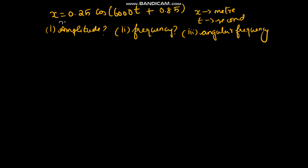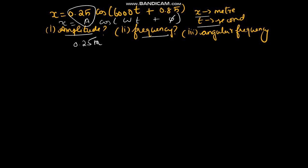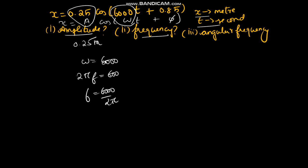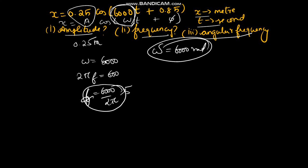Now, comparing x = A cos(ωt + ψ) with a given equation where x is in meters and t in seconds: the amplitude is 0.25, so it is 0.25 meters. For frequency: ω = 6000, so 2πf = 6000, giving f = 6000/(2π). The angular frequency ω is 6000 radians per second. This is the common type of question asked about amplitude, frequency, and angular frequency.